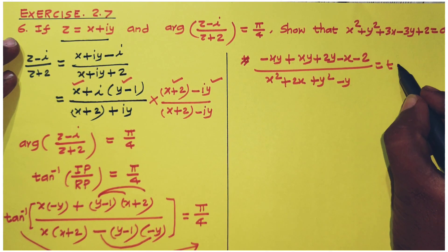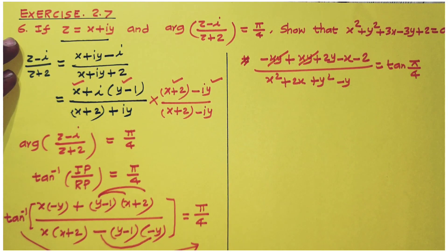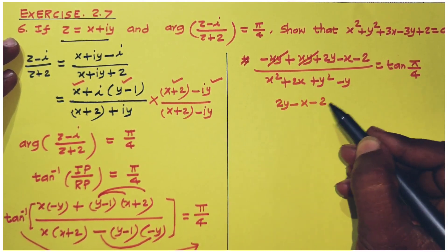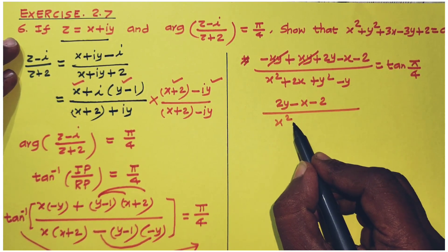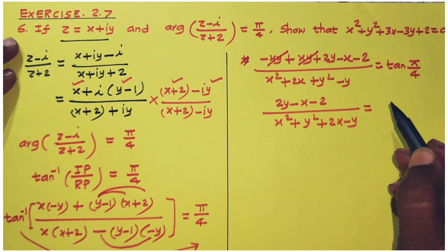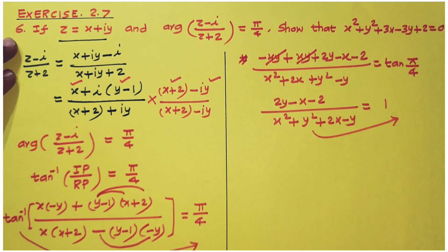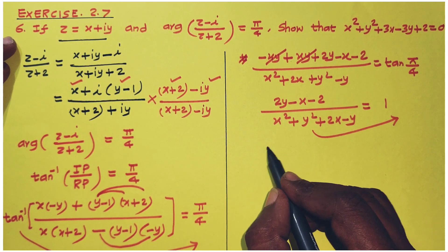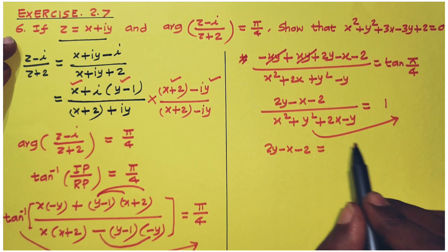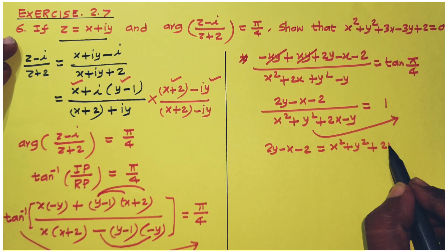Since tan(pi by 4) equals 1, the minus xy and plus xy cancel. We get (2y minus x minus 2) divided by (x squared plus y squared plus 2x minus y) equals tan(pi by 4), which equals 1. So multiplying both sides by the denominator: 1 times (x squared plus y squared plus 2x minus y) equals 2y minus x minus 2.